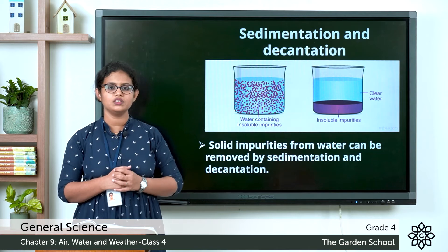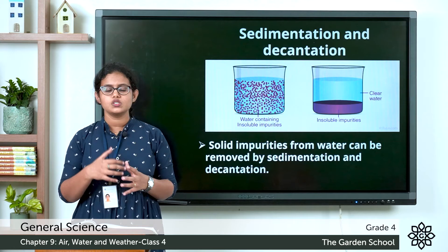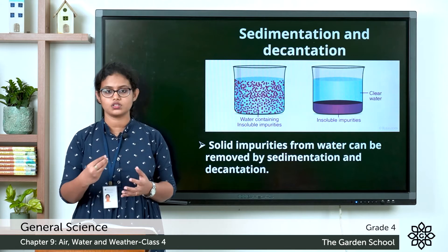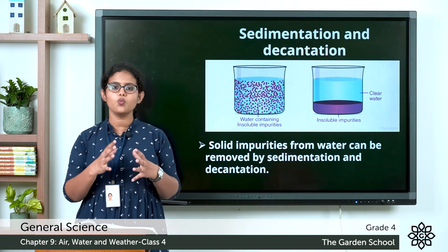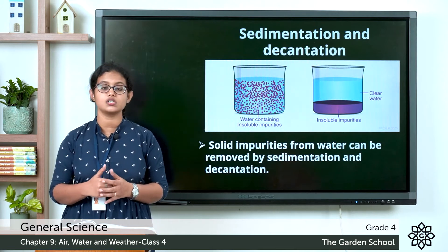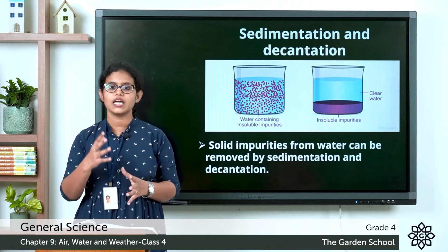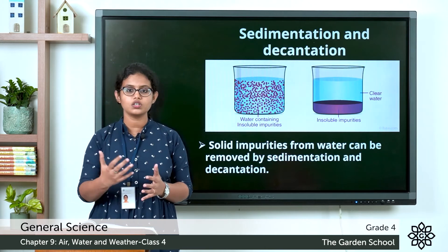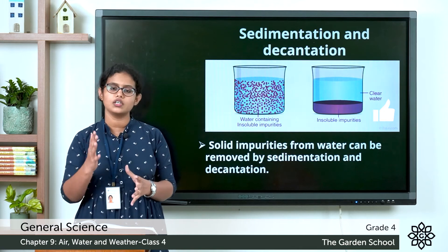The next method is sedimentation and decantation. Sedimentation means the settling down of insoluble particles in the water. For example, to remove mud from muddy water, you first let the mud settle down at the bottom — that is sedimentation, and those settled particles are called sediments. The water is then slowly poured into another container, and that is called decantation.